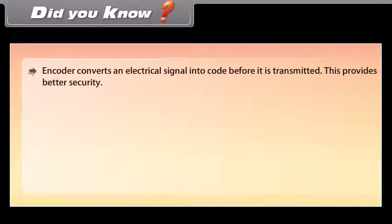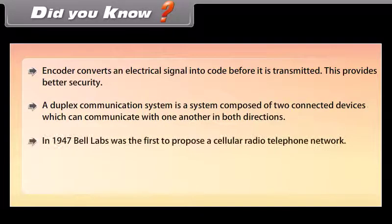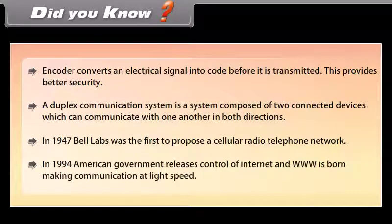An encoder converts an electric signal into code before it is transmitted, which provides better security. A duplex communication system is composed of two connected devices that can communicate with one another in both directions. In 1947, Bell Labs was the first to propose a cellular radio telephone network. In 1994, the American government released control of the internet, and the World Wide Web was born, making communication at light speed.